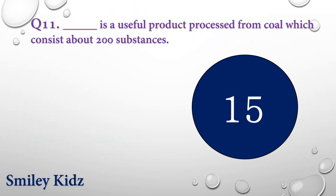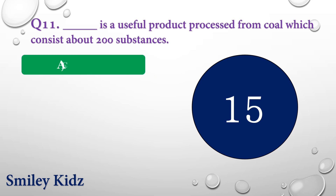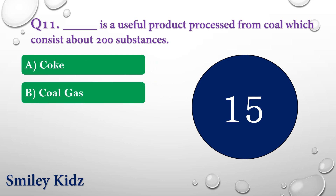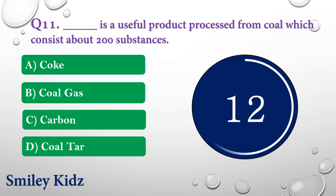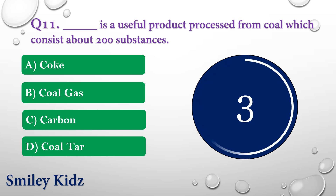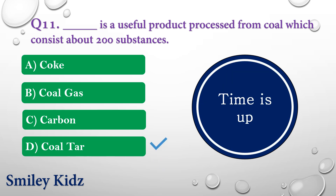Question number eleven: Dash is a useful product processed from coal which consists of about 200 substances. The options are: A) Coke, B) Coal gas, C) Carbon, or D) Coal tar. Your time is up and the right answer is option D — Coal tar. Coal tar is a useful product processed from coal which consists of about 200 substances.